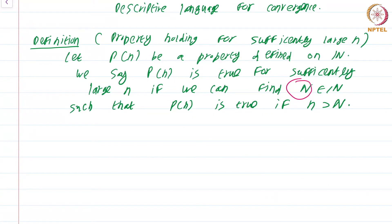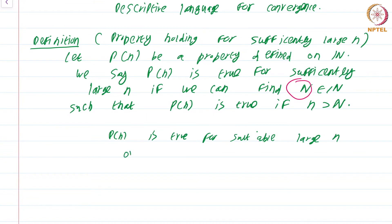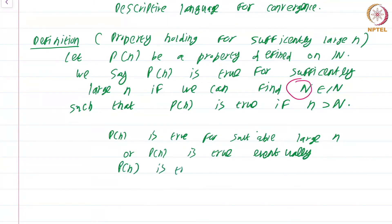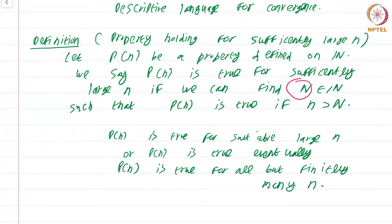We will usually say that P of n is true for sufficiently large n. We will also use certain synonyms just for variety: we will say P of n is true for suitably large n, or P of n is true eventually, or even a fancier one — P of n is true for all but finitely many n. These are various phrases that we shall use to describe the same thing.